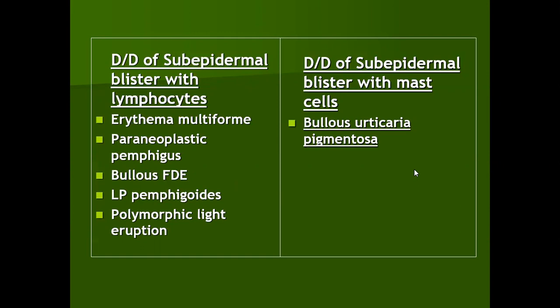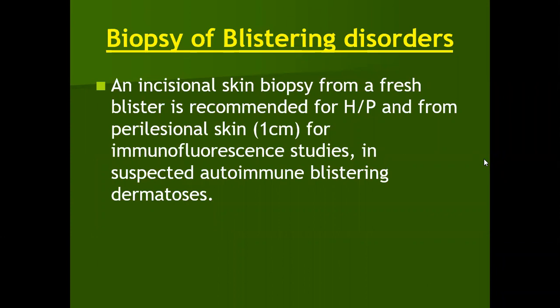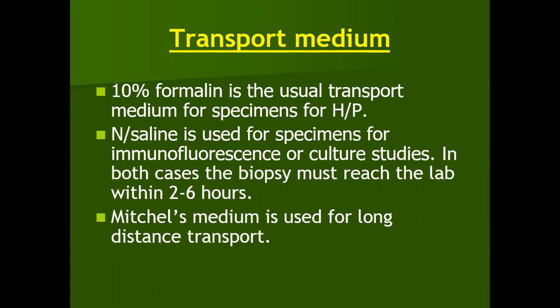A few tips for taking biopsy in a blistering disorder: an incisional skin biopsy should be taken from a fresh blister, along with a perilesional skin biopsy not more than one centimeter from the fresh blister. The transport medium for histopathology is 10% formalin solution freshly made, while normal saline is used for the perilesional skin biopsy for immunofluorescence testing. The sample should reach the laboratory within two to six hours; otherwise the biopsy in normal saline will be denatured. Mitchell's medium can be used for longer transport for DIF, but it is not readily available.